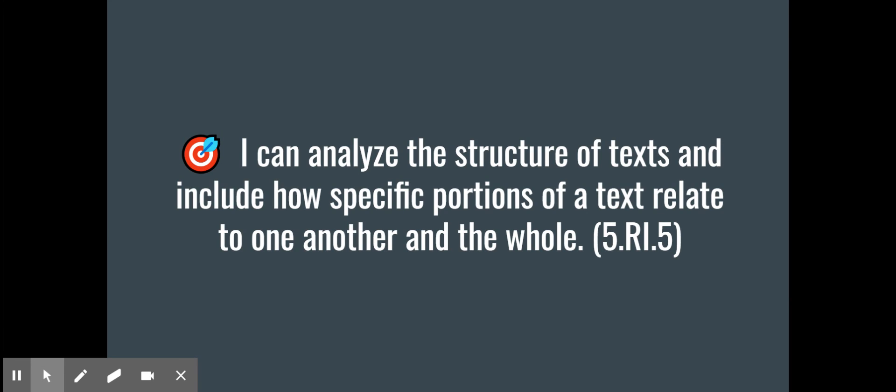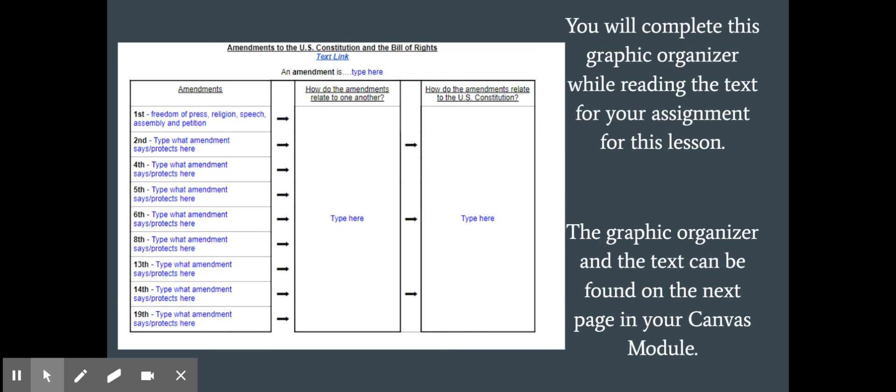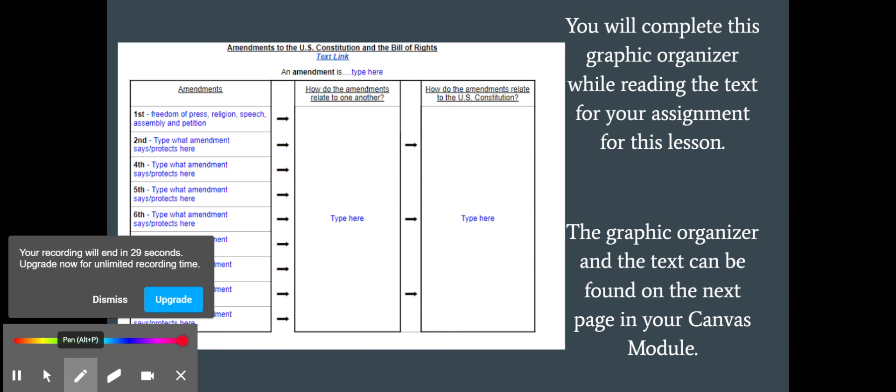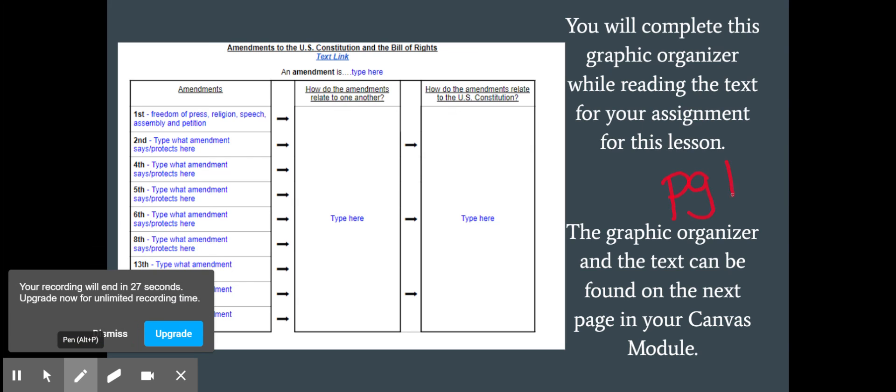Alright so again this is our learning target and now you are going to go ahead and do this with analyzing how the amendments work together. So you're going to go ahead and complete this graphic organizer while reading the text. You will be starting on page 12 because we've already done the first couple and make sure that this is shared with your teacher and you're going to find on the next Canvas page.